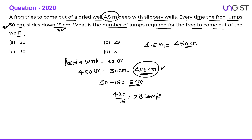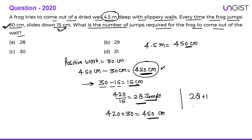By the pattern of +30 then −15 per jump, the frog takes 28 jumps to reach 420 cm. Once at 420 cm, one more jump of 30 cm brings it to the top at 450 cm. So 28 + 1 = 29 total jumps are required.